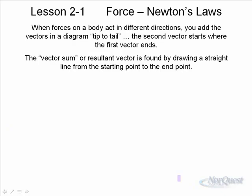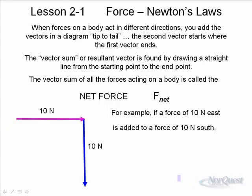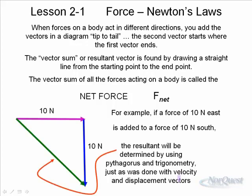When forces act on a body in different directions, you add the vectors tip to tail. The vector sum is the resultant, called the net force. If a force of 10 Newtons east acts on a body, and also a force of 10 Newtons south acts on a body, then you have two-dimensional forces. The resultant of these two forces is going to cause an object to move not only to the east, but also towards the south. The resultant will be determined by using Pythagoras and trigonometry. We would take 10 squared plus 10 squared equals c squared, and we would solve for the resultant. We could also determine the angle. In this case, it would be 45 degrees.